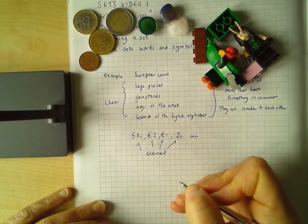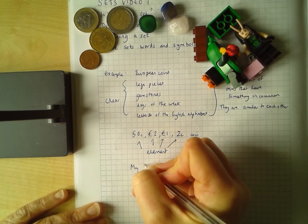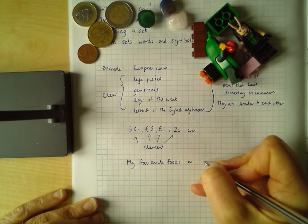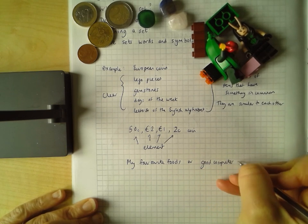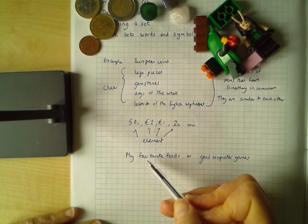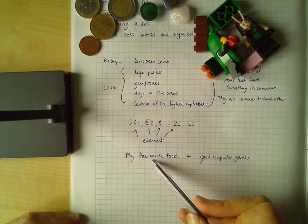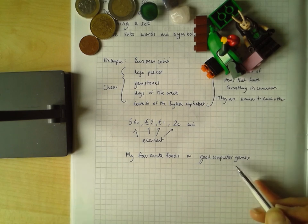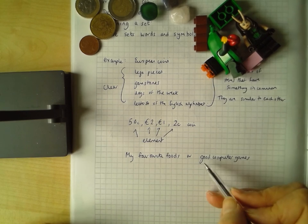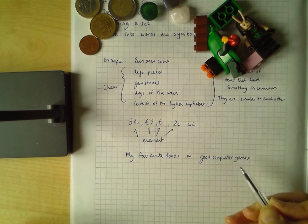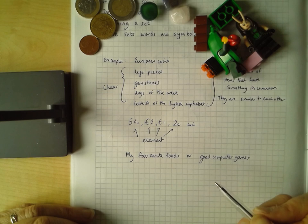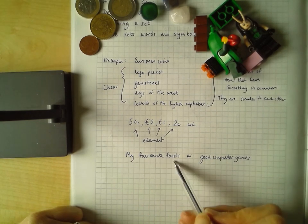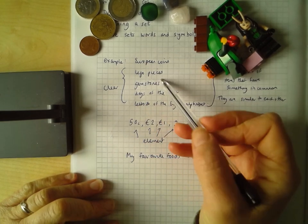But an unclear set, or a badly described set might be something like my favourite foods. I think this one would be too big to define clearly. Because my favourite foods might change from the time of the day to the time of the year. Good computer games, who says what's a good computer game and what's not a good computer game. So it's very important that when we say what a set is, that it's clear what goes into it. I might say a good computer game is minesweeper, back from when I was a student. You might go, that's a rubbish computer game. Fortnite's much better, or Among Us is much better. So this one depends too much on an opinion, and this one might change from time to time.